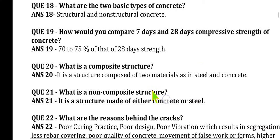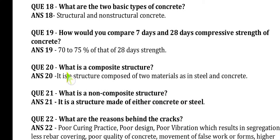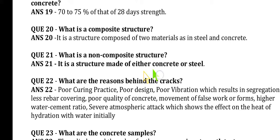Question 20: What is a composite structure? It is a structure composed of two materials, such as steel and concrete. Question 21: What is a non-composite structure? It is a structure made of either concrete or steel alone — made of concrete or a metal structure only.